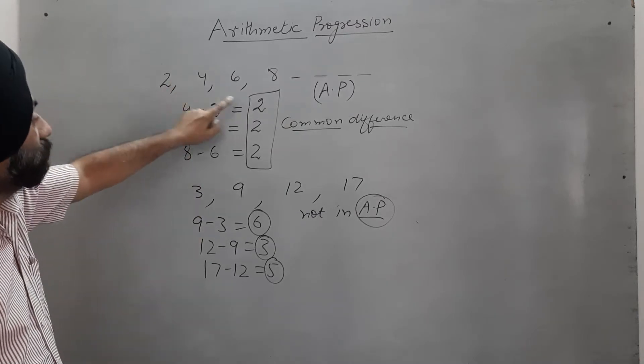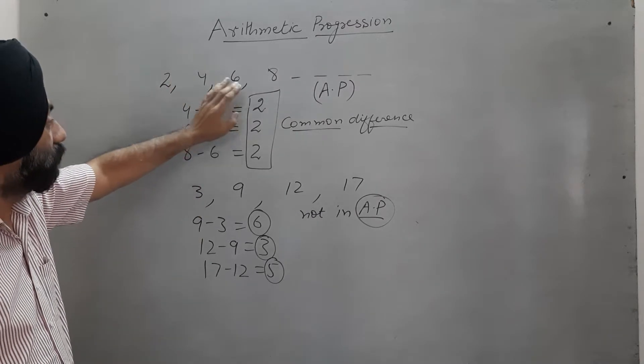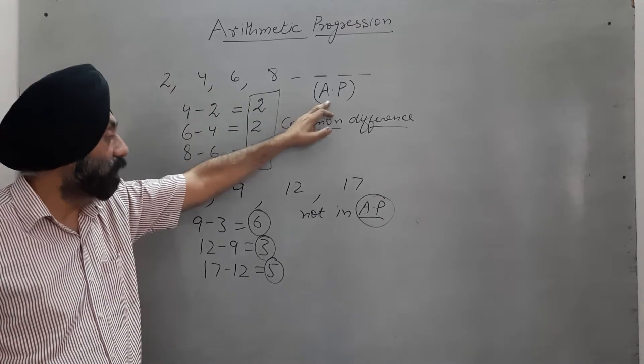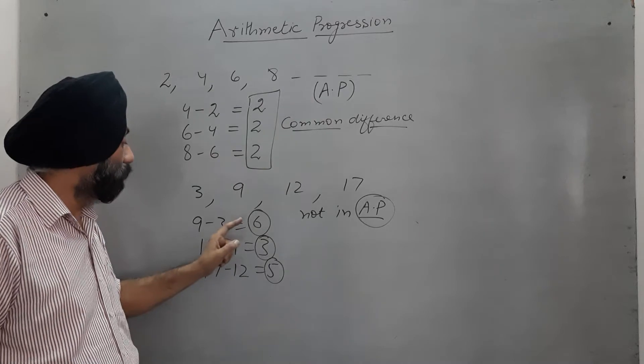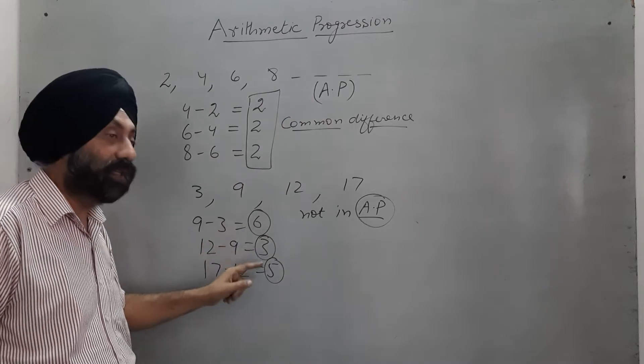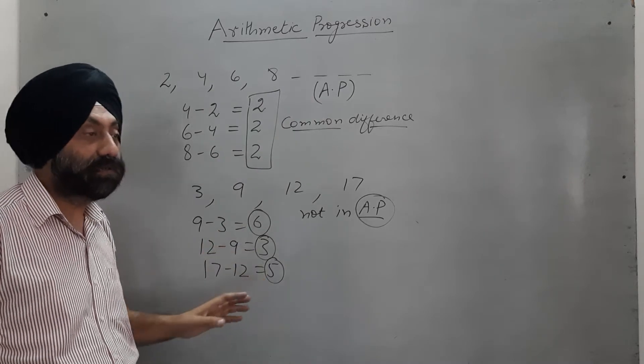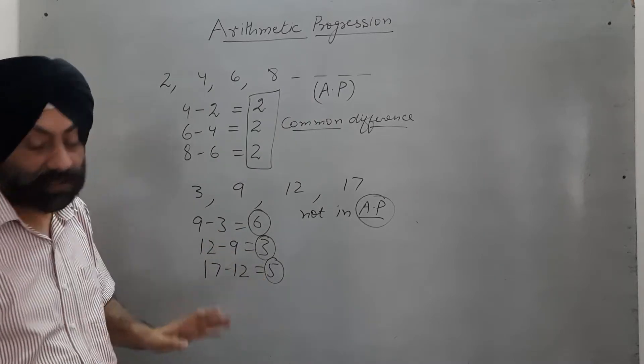So the rule is: if the common difference is the same throughout, then the numbers are in AP. If the common difference is not the same, then they are not in AP.